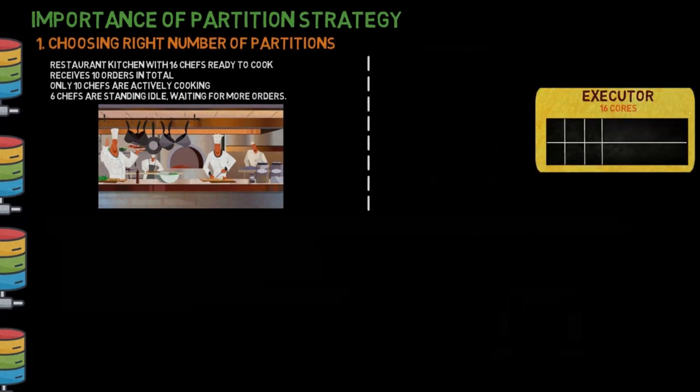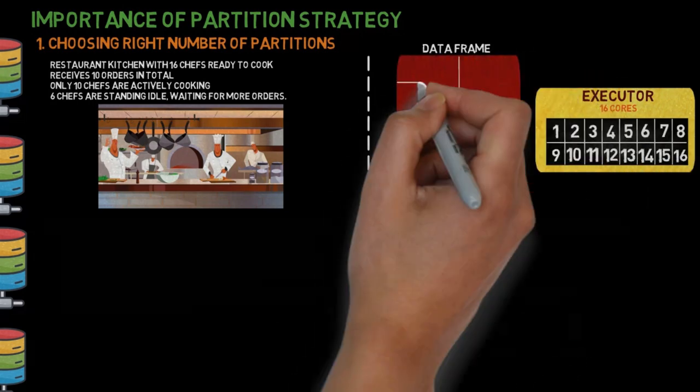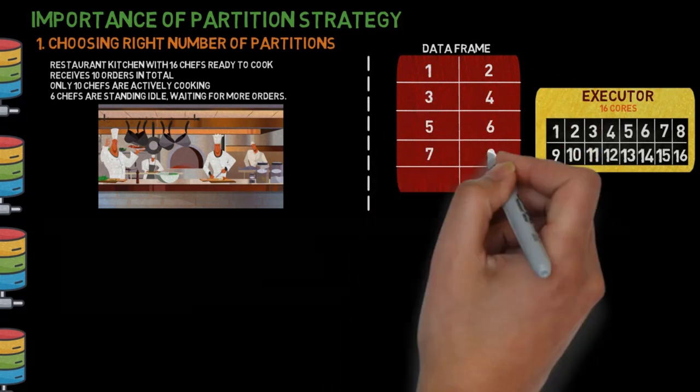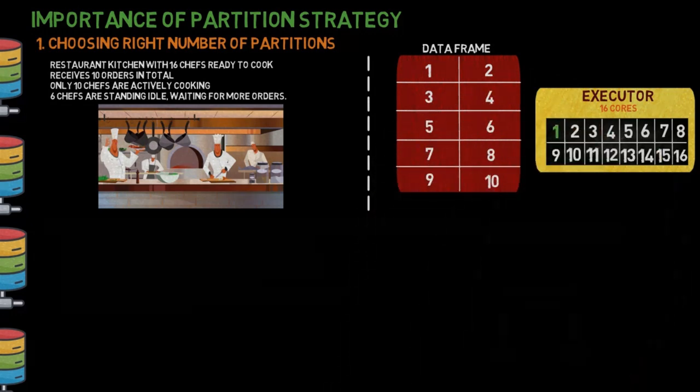Similarly, envision a scenario with a 16-core processing unit. If we create 10 partitions of the RDD or data frame, each partition corresponds to an order.